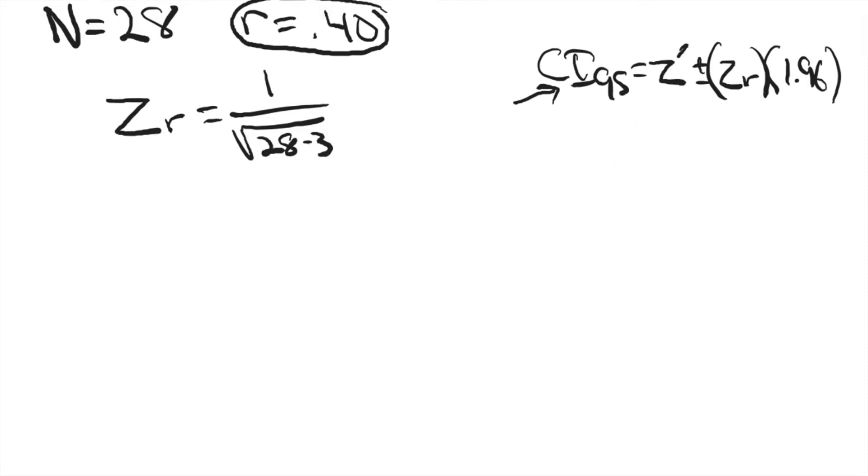And we need the standard error of the confidence interval, which we're going to calculate, and then we need a value from appendix A. Appendix A is the values associated with the normal distribution.